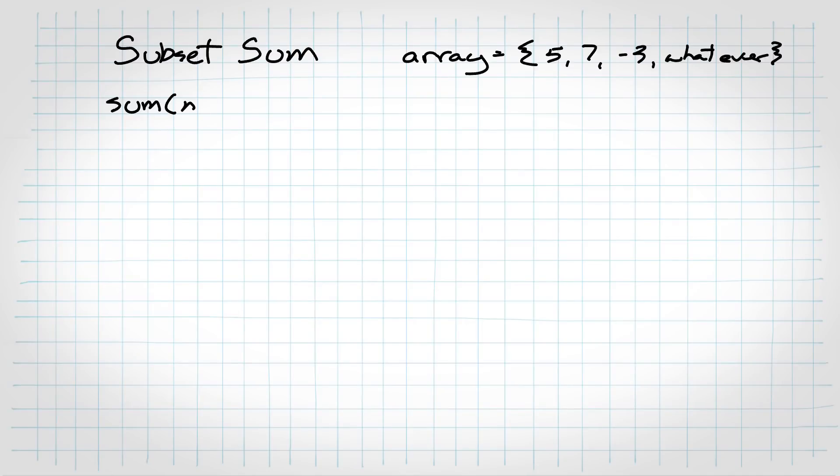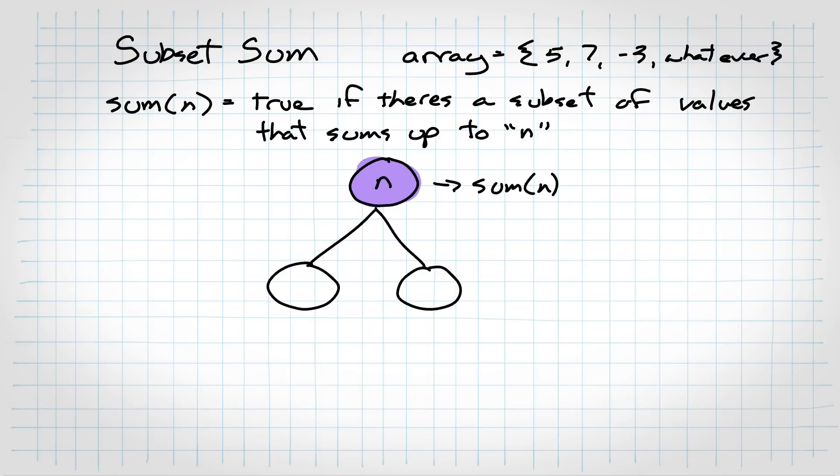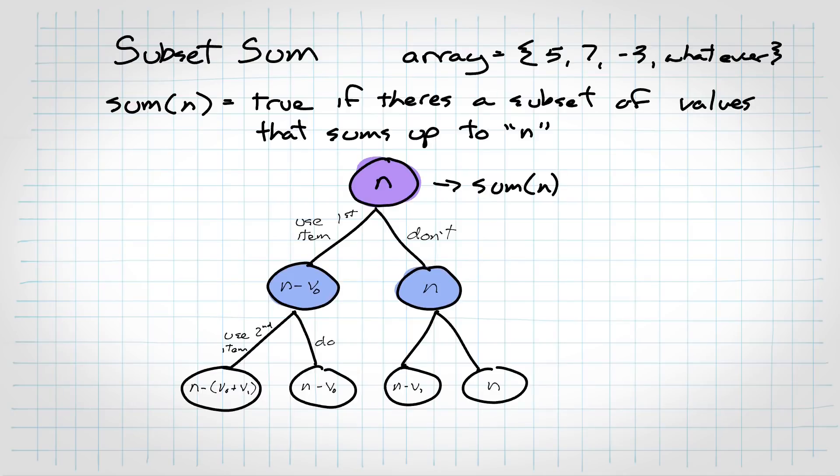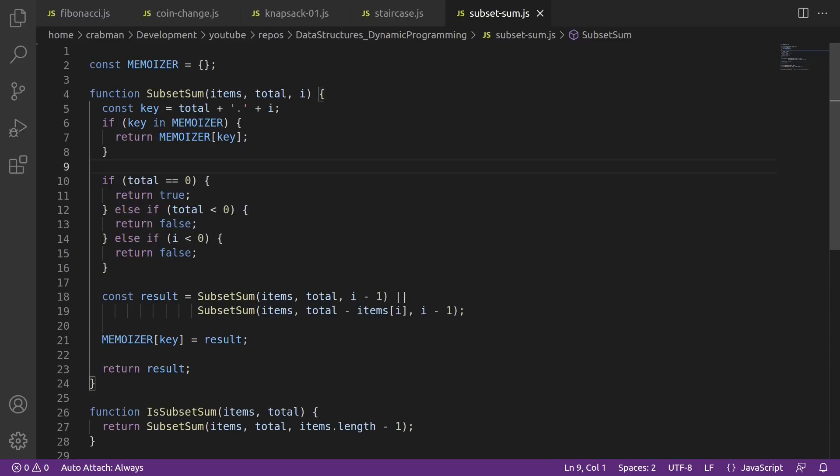Here's the subset sum problem, super similar to the knapsack problem. At the top of the tree, you've got the total sum you're trying to make. And each subtree can either include or not include a value, pretty much exactly like the knapsack one. So the answer then is basically if either of these subtrees is true, then the root is true. So you're doing an or. And here's the code. I'm really hoping you're seeing a pattern to these answers. We just had to or the two results together.